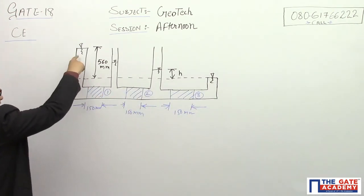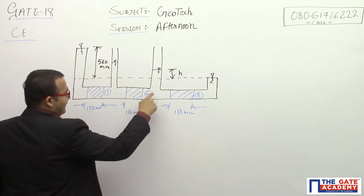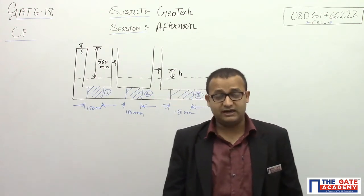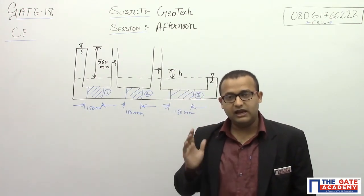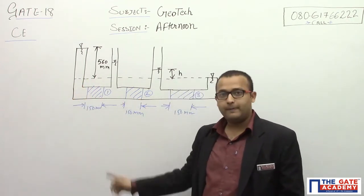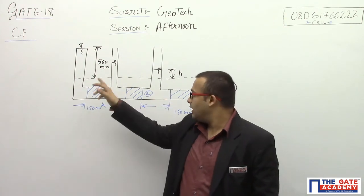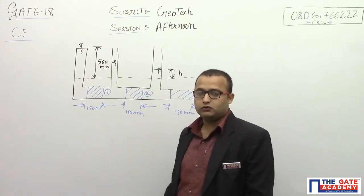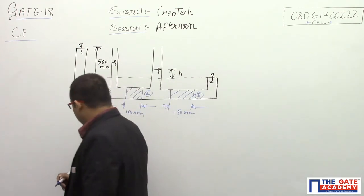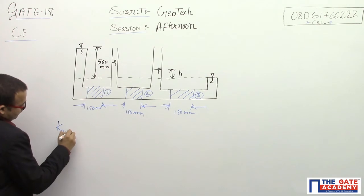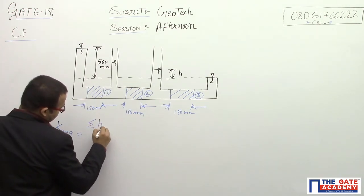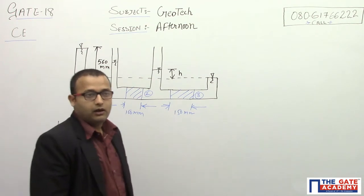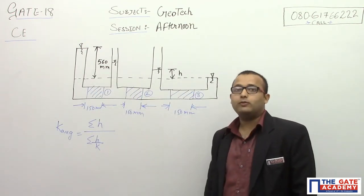The water is going from high head to low head. It will pass through soil 1, then soil 2, and then soil 3. It is passing through three soils — this is a stratified soil sample with three layers — and the flow of water is normal to, that is perpendicular to, the number of layers. When flow is normal to the layers, we calculate the equivalent permeability using the formula: K_eq = sum of H divided by sum of (H divided by K).